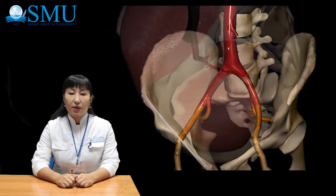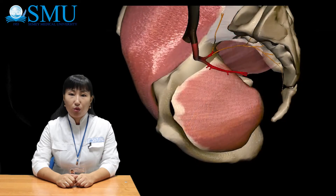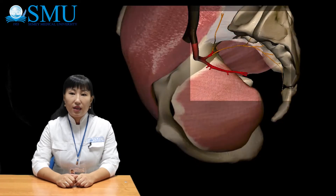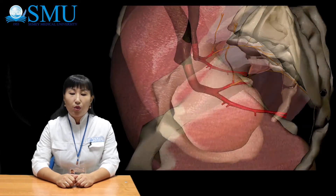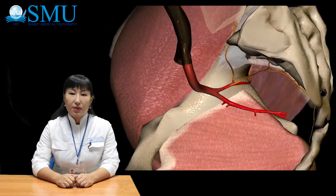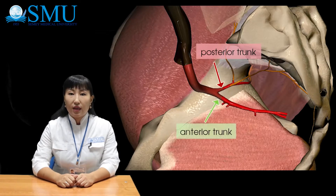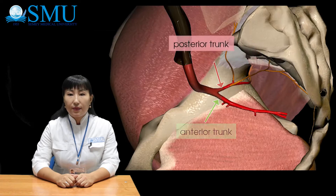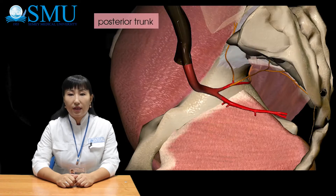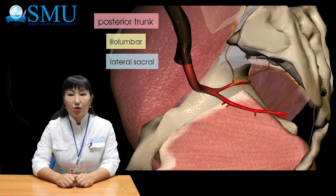Moving on to the internal iliac artery: it runs along the medial edge of the psoas major muscle downward into the pelvic cavity, and at the upper edge of the greater sciatic foramen is divided into the posterior trunk and anterior trunk. The posterior trunk gives off three branches: iliolumbar artery, lateral sacral artery, and superior gluteal artery.